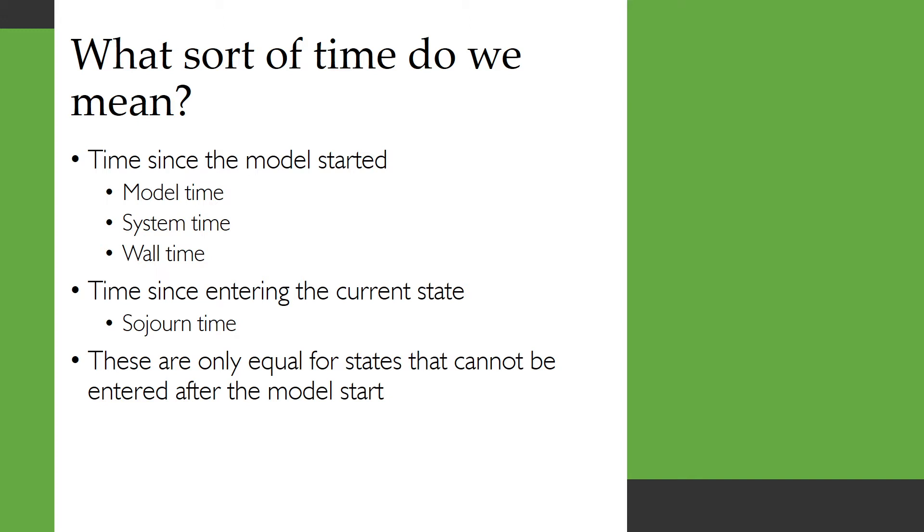Because there's actually a couple of different sorts of things we could mean when we say time in a model. So we could mean the time since the model started. We might call that the model time or system time. Sometimes we call it the wall time because it's like there's a clock on the wall and that's telling us how long the model's been running for.